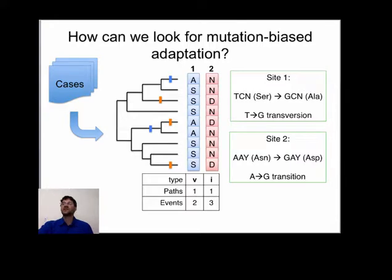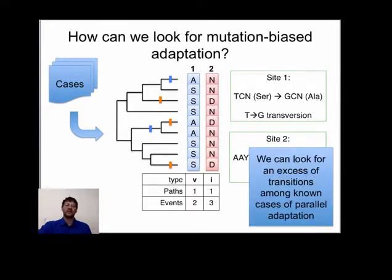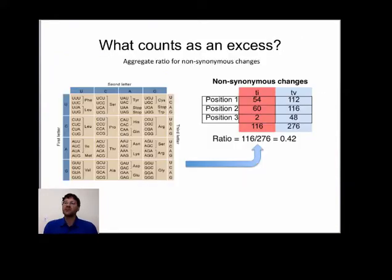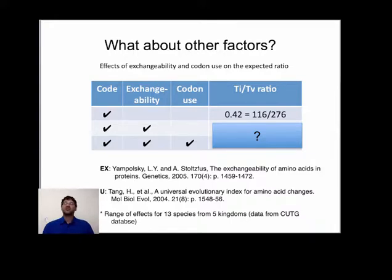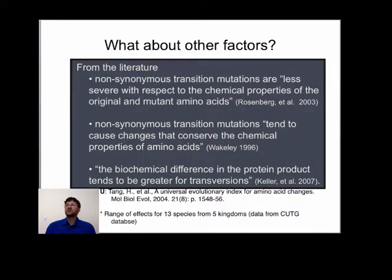We can combine all those results and look for an excess of transitions among known cases of parallel adaptation. This raises the question of what counts as an excess. Because we're only looking at amino acid replacements, if we count all paths from one codon to another defined by the genetic code, we find 116 transitions that result in an amino acid replacement and 276 transversions — a ratio of about 1 to 2.4, or roughly 0.4. Some have suggested that amino acid changes occurring via transition mutations are more conservative than transversions — that is, that selection favors transitions.